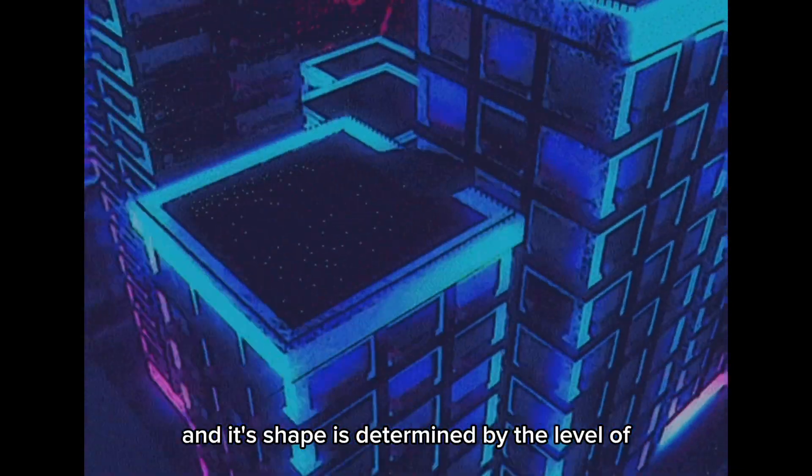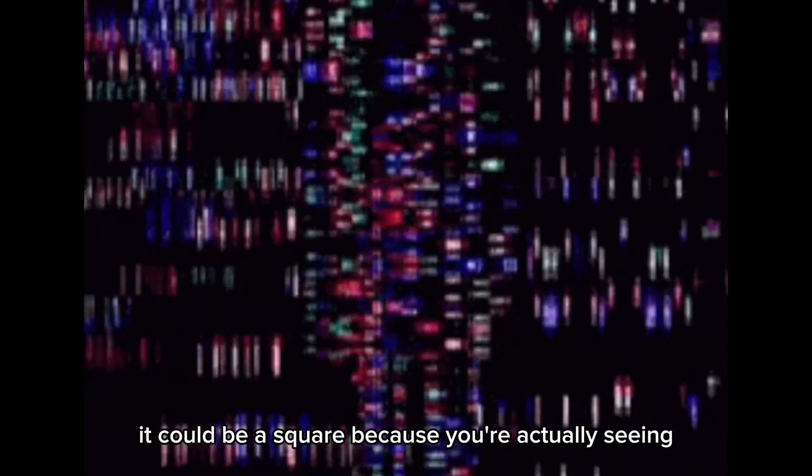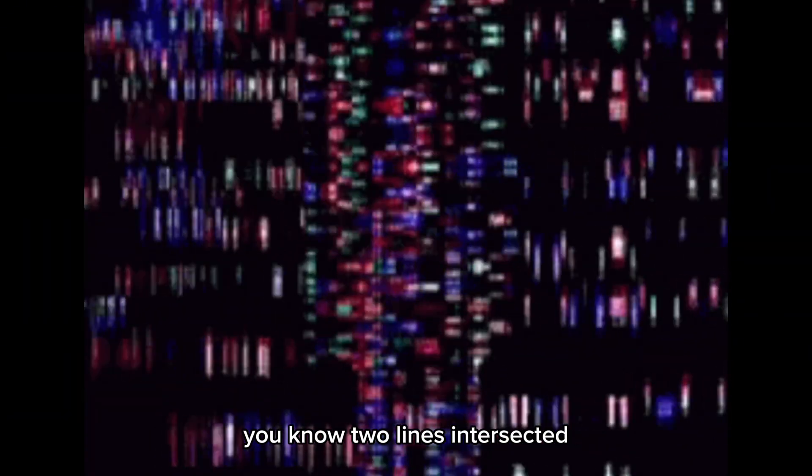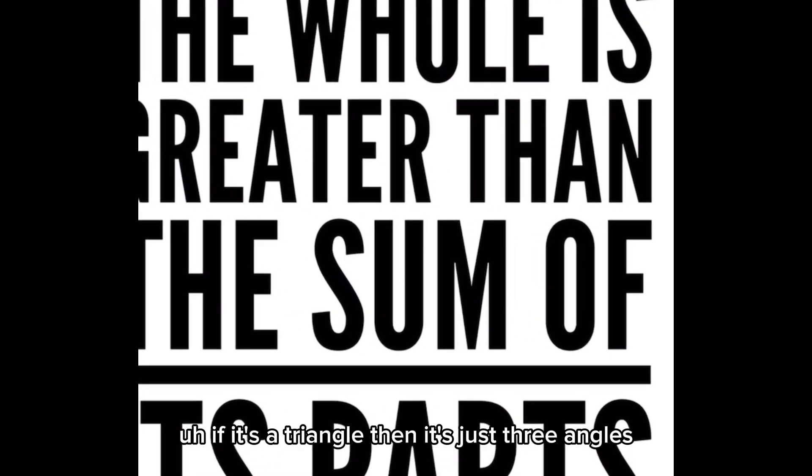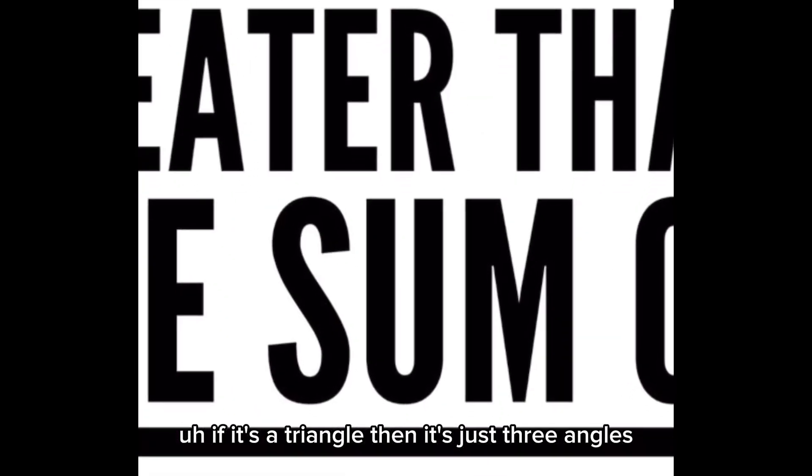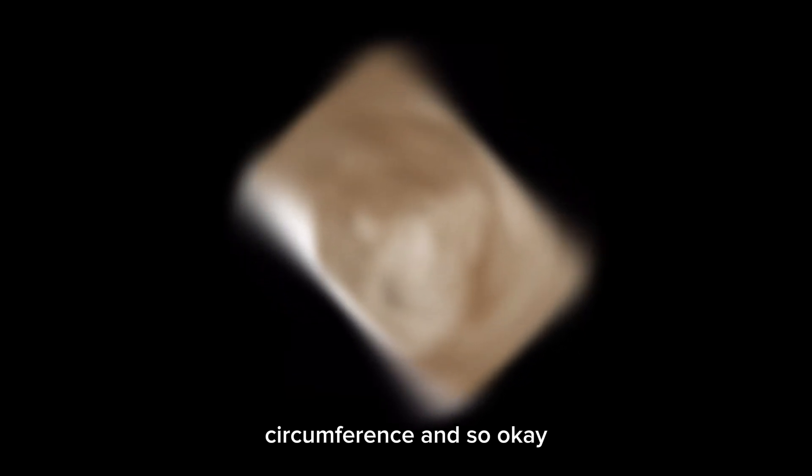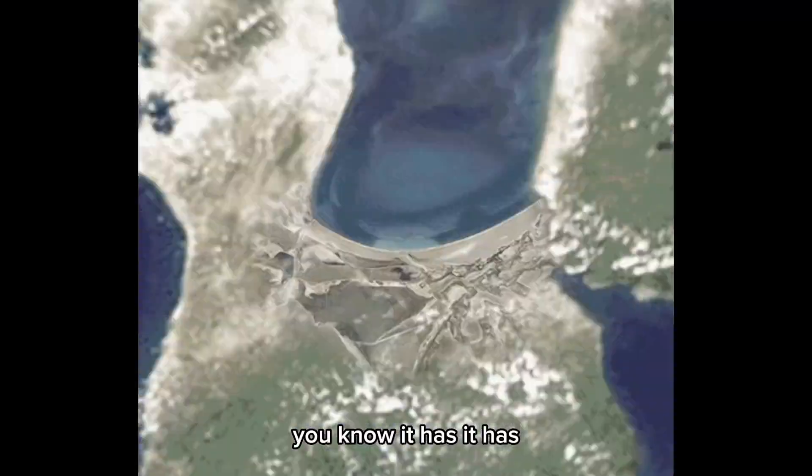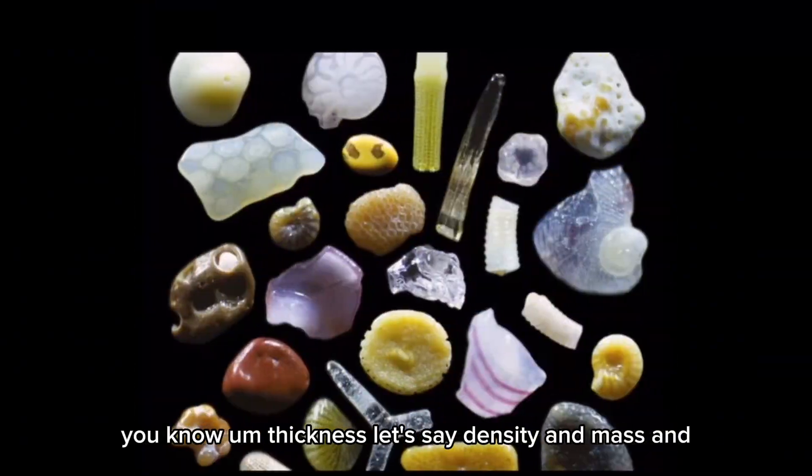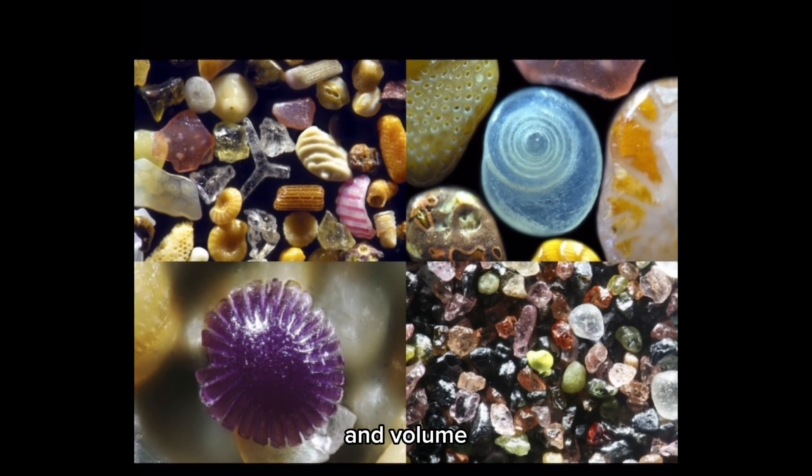Its shape is determined by the level of magnitude of dimension you are perceiving it. If it's two-dimensional, it could be a square because you're seeing two lines intersected by two other parallel lines. If it's a triangle, it's just three angles. A circle is just one circumference. If it's three-dimensional, it has depth towards the observer, thickness, density, mass, and volume.